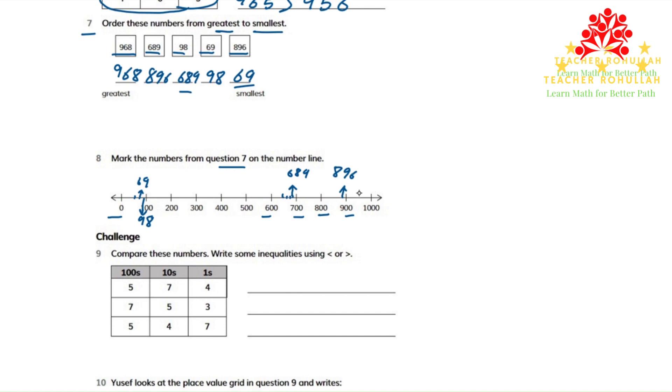And the biggest number is 968. 968 is between 900 and 1000. So the number halfway between the two is 950. Then 968 can be somewhere around here. I will write it down here.